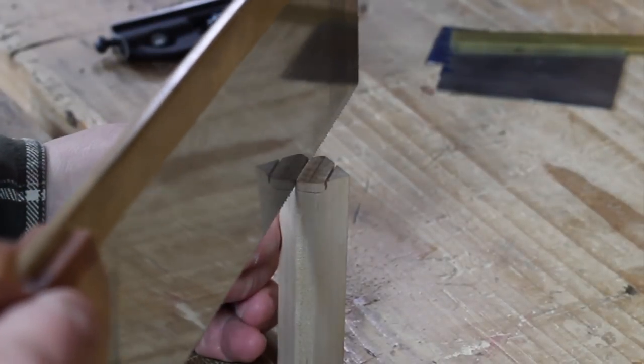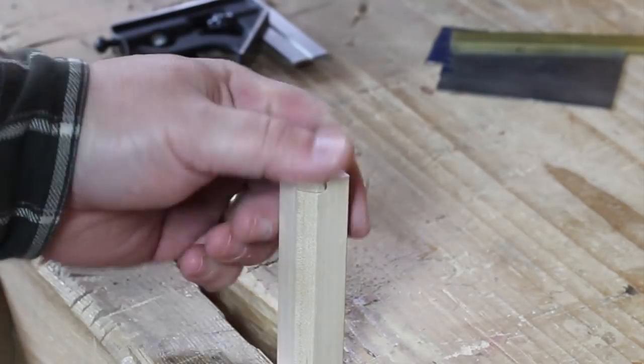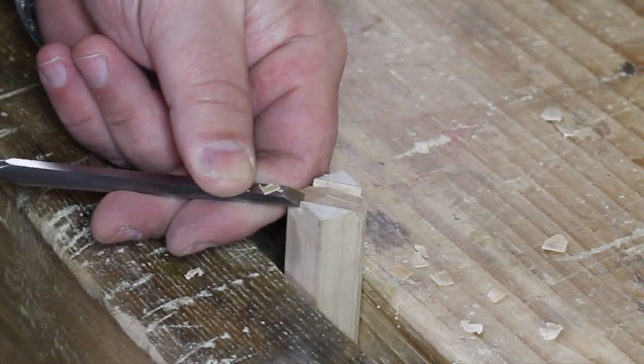On the other end of the beam, saw two kerfs about three sixteenths of an inch deep. Pare out the waste between the kerfs to create a notch for a small strip of brass.